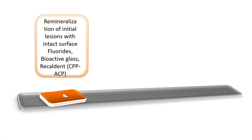The fourth principle is remineralization of initial lesions with intact surface. This is done with fluoride — fluoride reacts with hydroxyapatite to form fluorapatite, which is more resistant to acid dissolution. We can also use bioactive glass and Recaldent, abbreviated as CPP-ACP — casein phosphopeptide amorphous calcium phosphate — a nano-complex found in the casein protein of milk.